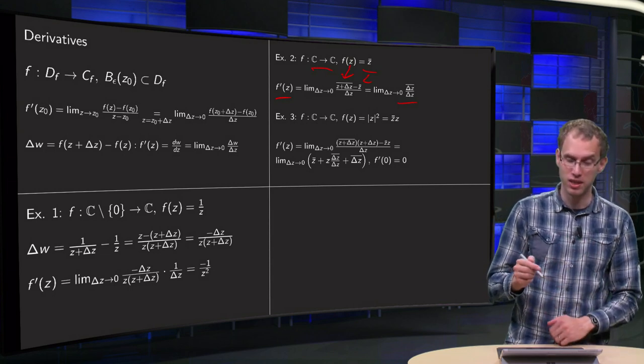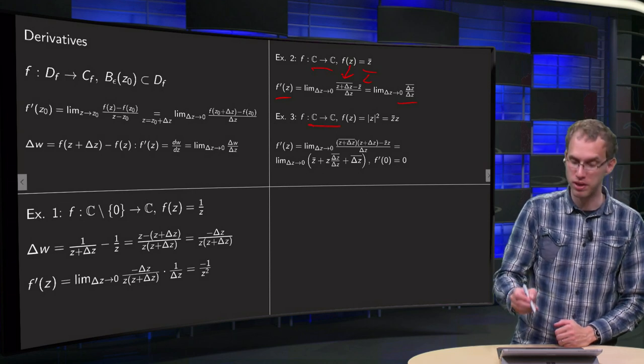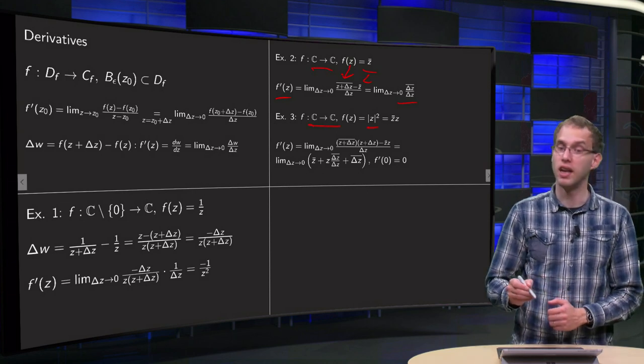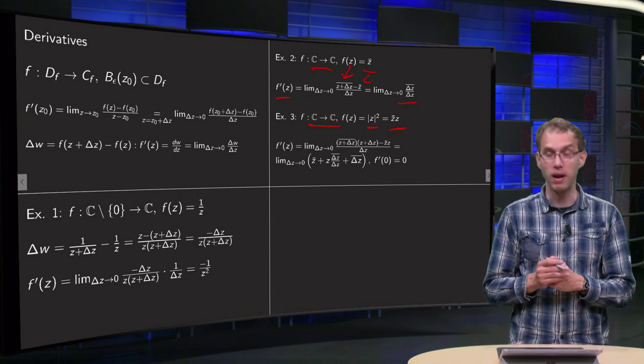Let's look at the second example: f from C to C, f of z equals the norm of z squared equals z times z bar. Also, it doesn't seem that bad, right?